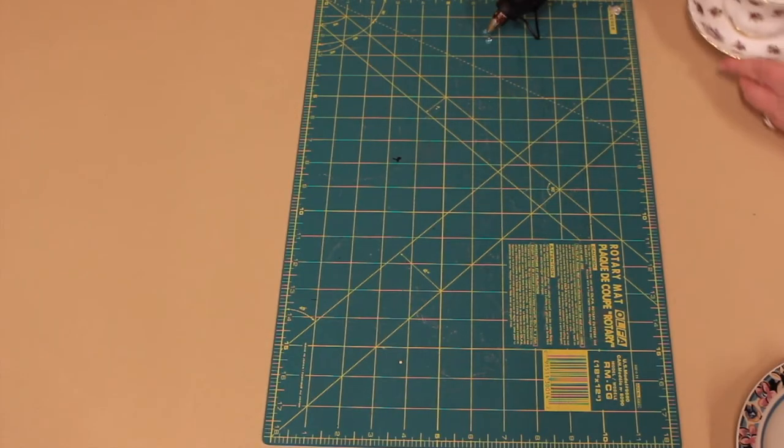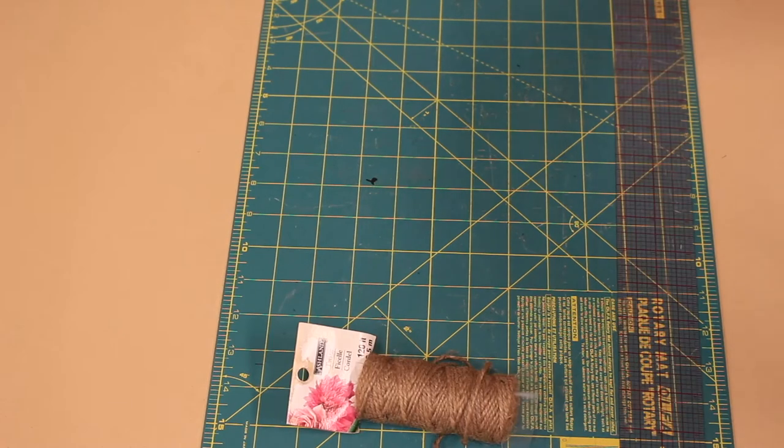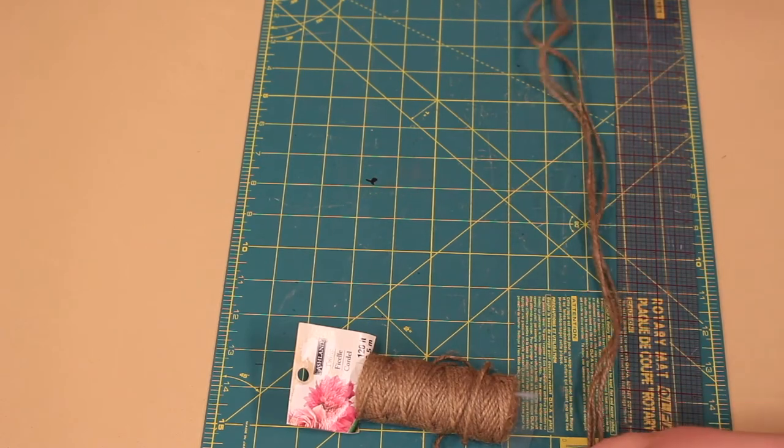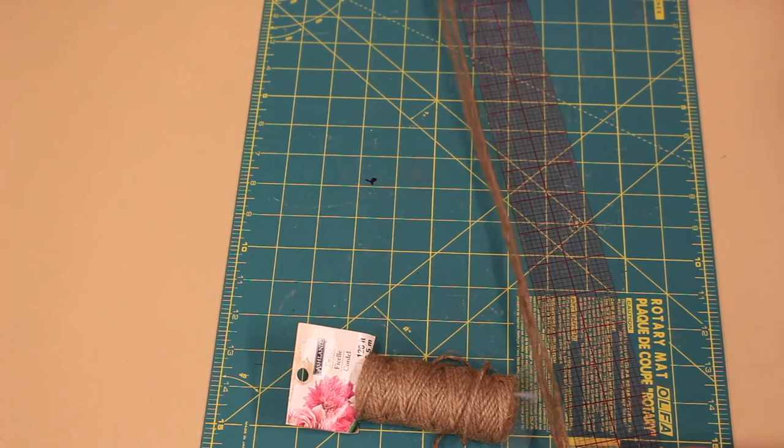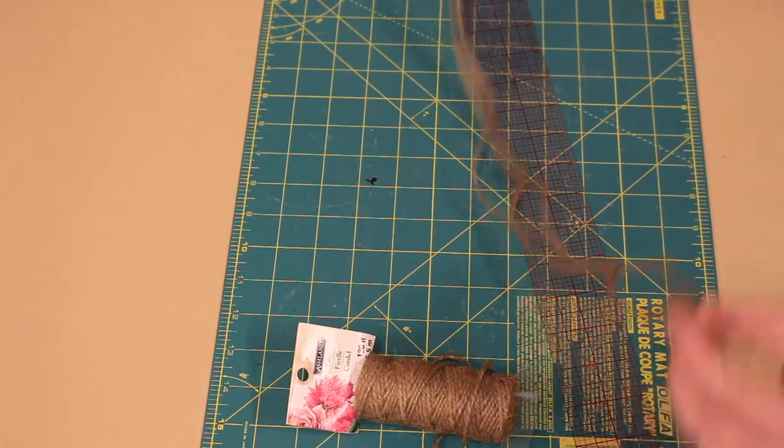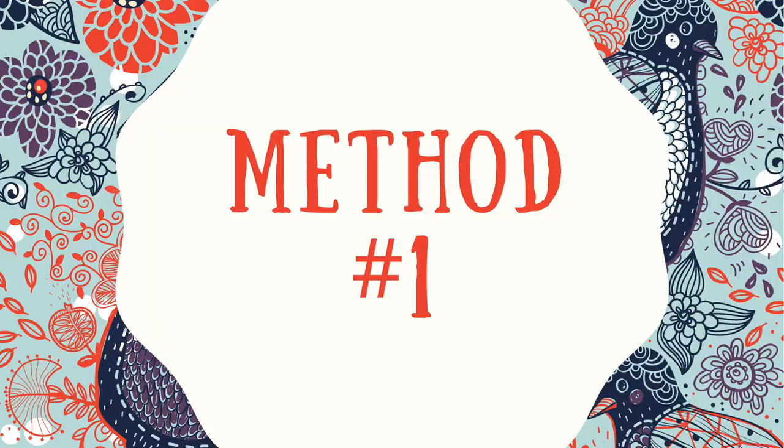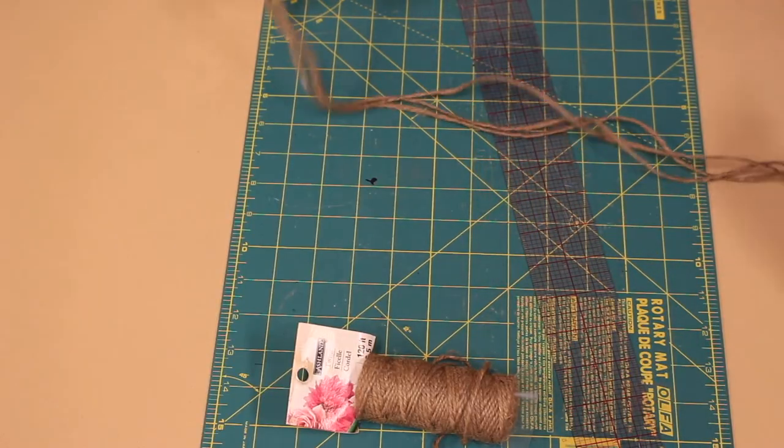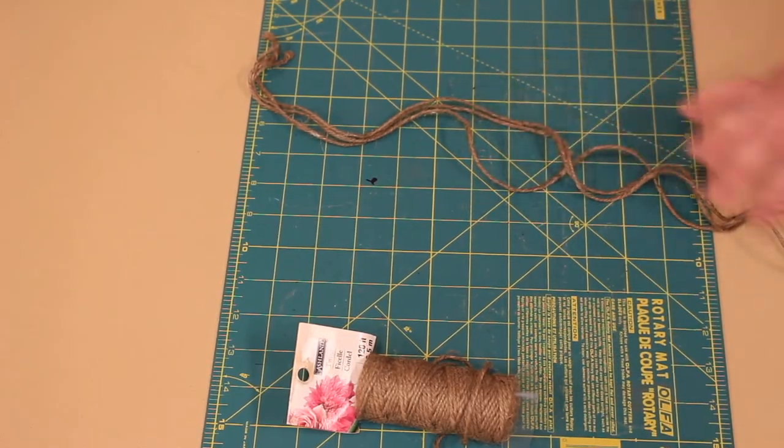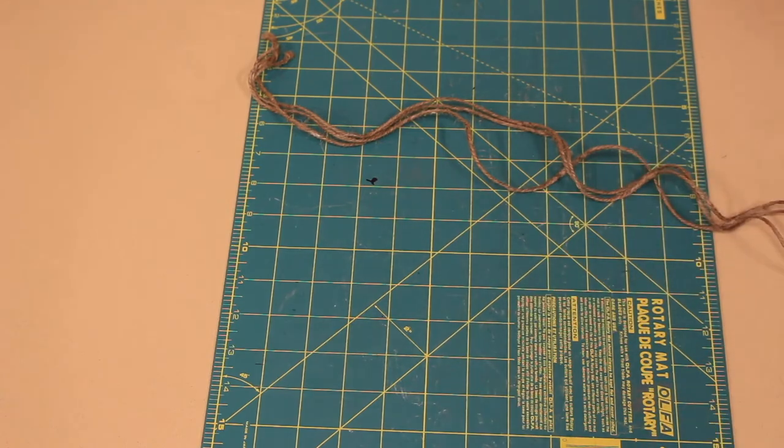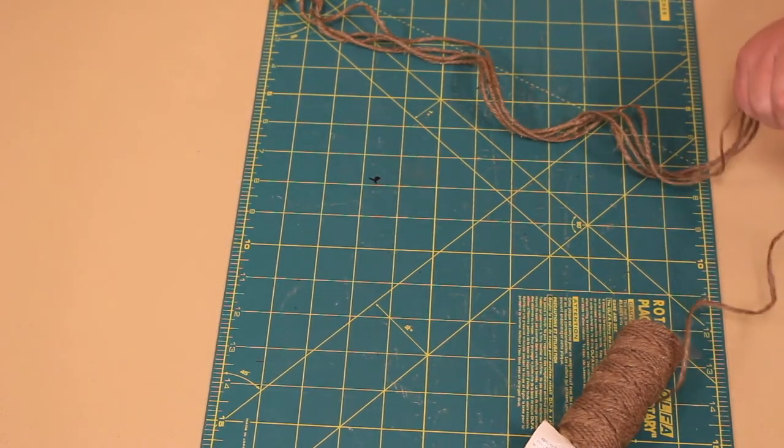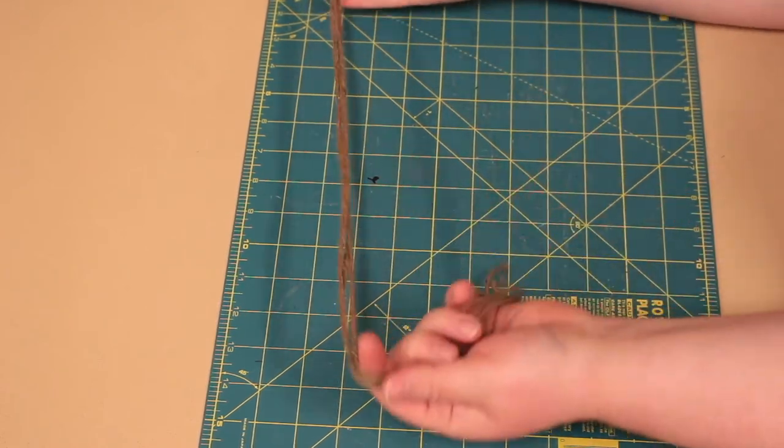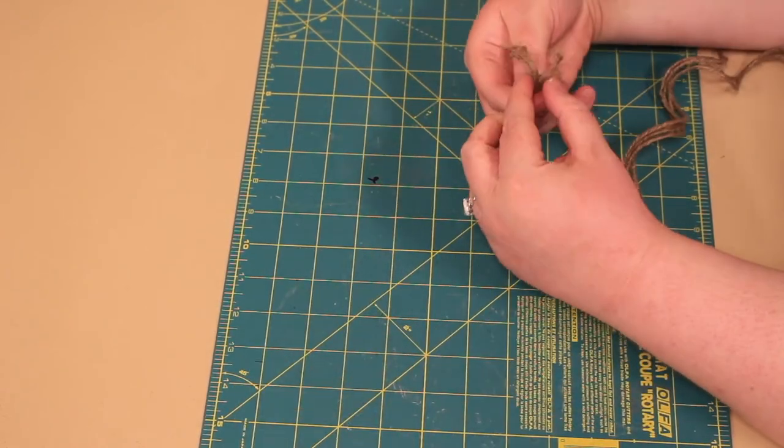Next, we will need to create the twine hanger for the teacup bird feeder. You just need your twine, scissors, and a ruler. I will demonstrate two different methods to create a twine hanger. For the first method, you will need to start by cutting four long pieces of twine, about two feet long. If you have the teacup at an angle on the saucer, you only need three strings.